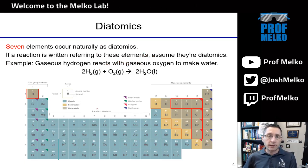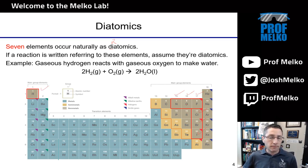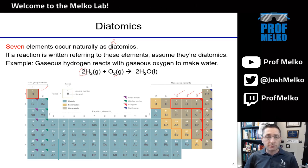Seven elements in the periodic table occur as diatomics, where di means two and atomics means atoms. In chemical language, hydrogen gas means H2 — it's a diatomic. There are seven of these: hydrogen, nitrogen, oxygen, fluorine, chlorine, bromine, and iodine. So if a question says iodine gas, you need to know that's I2, not just I. Same goes for hydrogen and oxygen. Most of them live in the corner of the periodic table; hydrogen is the exception as it is with many things in chemistry. Commit these to memory.